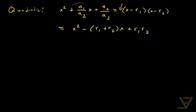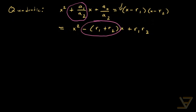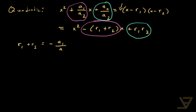Now we compare coefficients. The x-terms match up and the constant terms match up as well. So we get that r_1 + r_2 = -a_1/a_2, and we also get that r_1 · r_2 = a_0/a_2.